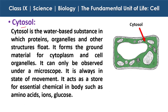First is the cytosol. Cytosol is the water-based substance in which proteins, organelles, and other structures flow. It forms the ground material for the cytoplasm and cell organelles. It can only be observed under a microscope and is always in a state of movement. It acts as a store for essential chemicals in the body such as amino acids, ions, and glucose. The fluid-like moving structure you observe in the cytoplasm is nothing but cytosol — just like water moves in the sea, cytosol moves in the cytoplasm.